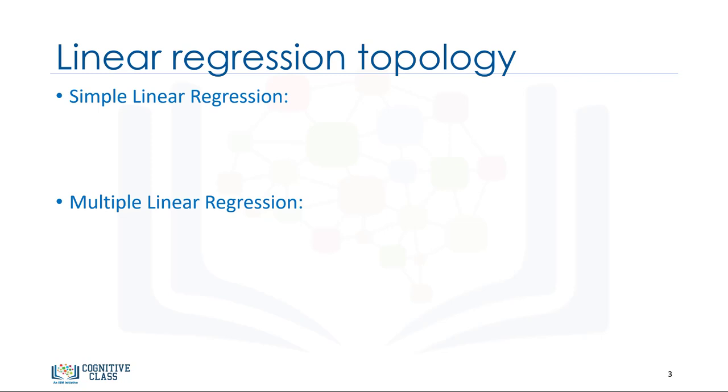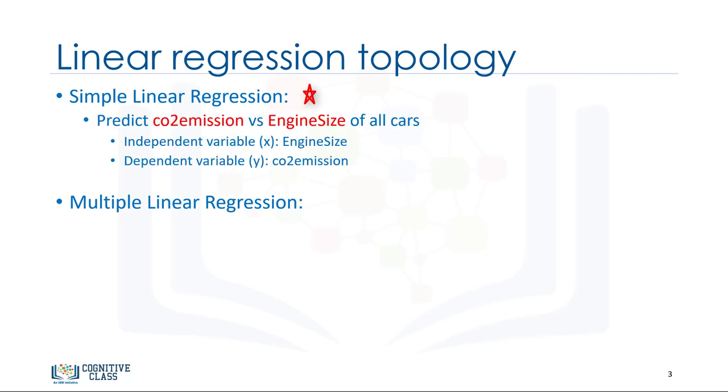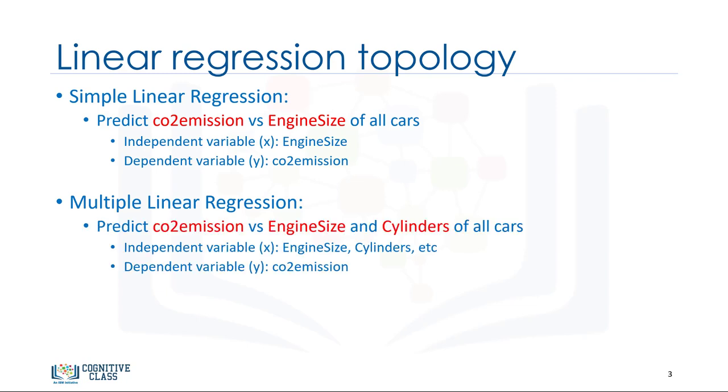They are simple regression and multiple regression. Simple linear regression is when one independent variable is used to estimate a dependent variable. For example, predicting CO2 emission using the engine size variable. When more than one independent variable is present, the process is called multiple linear regression. For example, predicting CO2 emission using engine size and cylinders of cars. Our focus in this video is on simple linear regression.